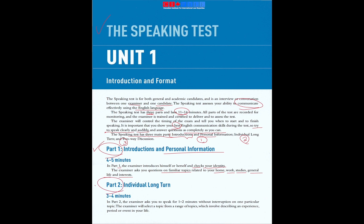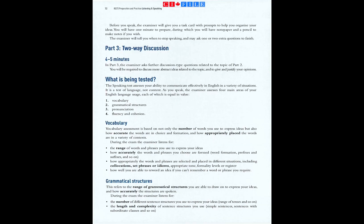Part two: Individual long turn. Three to four minutes. In part two, the examiner asks you to speak for one to two minutes without interruption on one particular topic. The examiner will select a topic from a range of topics which involves describing an experience, period, or event in your life. Before you speak, the examiner will give you a task card with prompts to help you organize your ideas. You will have one minute to prepare, during which you will have notepaper and a pencil to make notes if you wish. The examiner will tell you when to stop speaking and may ask one or two extra questions to finish.